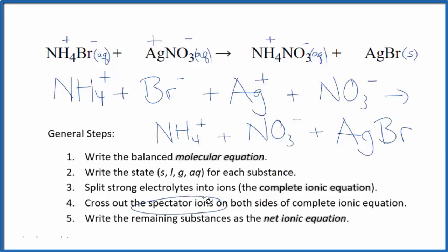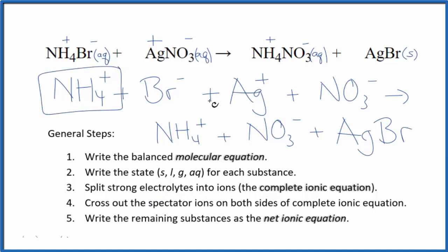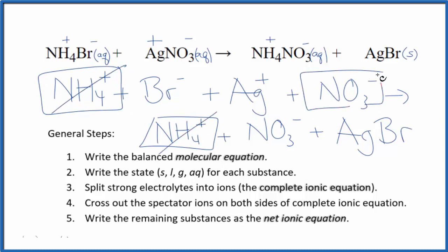Now we can cross out the spectator ions — they appear on both sides of the complete ionic equation and haven't changed, so we're not interested in them. In the reactants we have the ammonium ion, and in the products we have the ammonium ion — those are spectator ions, so we cross them out. We also have the nitrate ion in the reactants and again in the products, so we get rid of those too.